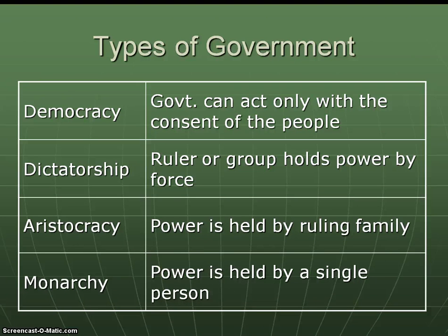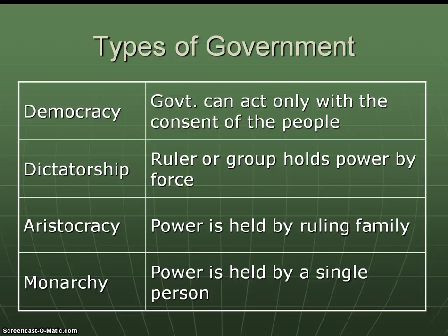There are various types of governments. A democracy was first developed in ancient Greece and states that government can only act with the consent of the people, usually through voting. In a dictatorship, a single ruler or group holds power through force — think Hitler, using military to hold power. In an aristocracy, power is held by a ruling family, like a king or queen, similar to a monarchy. In a monarchy, it's one person holding that power, sometimes passed down from family member to family member, usually through the oldest male.